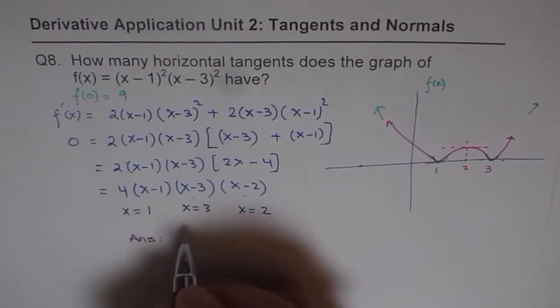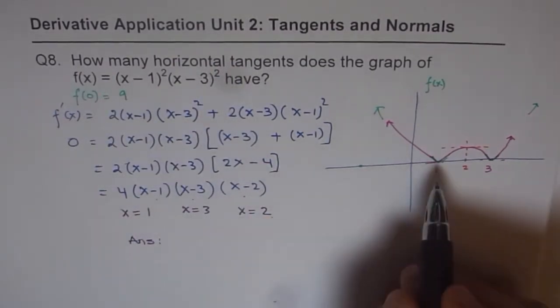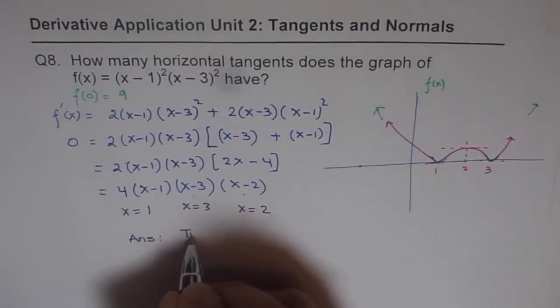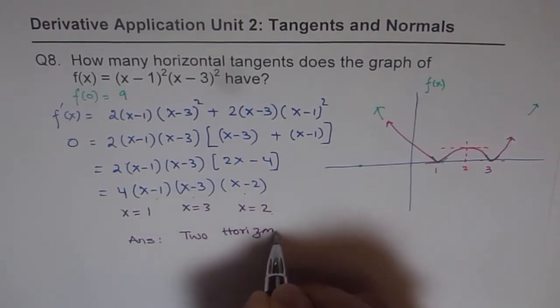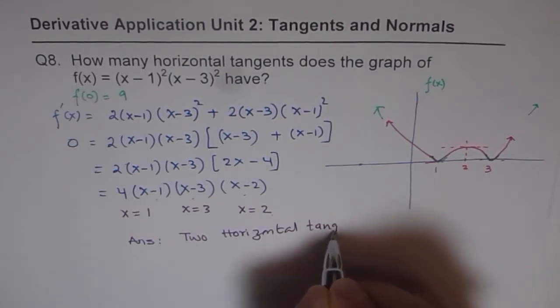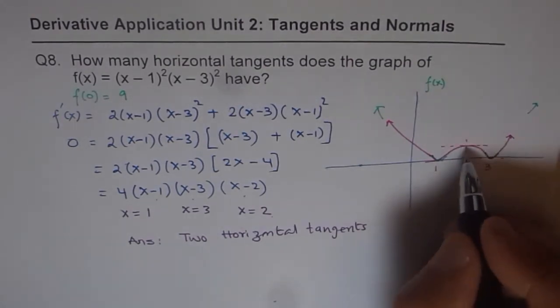And therefore, our answer is, we have how many horizontal tangents? We have, strictly speaking, 2 horizontal tangents. So, answer is, we have 2 horizontal tangents. Why 2? Because x-axis is 1 and the other one is right there at 2.